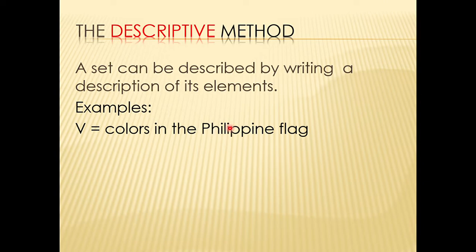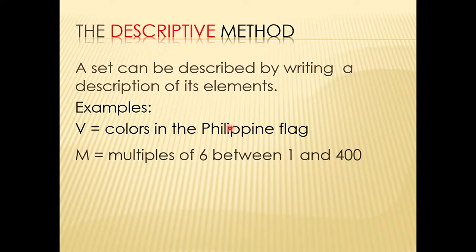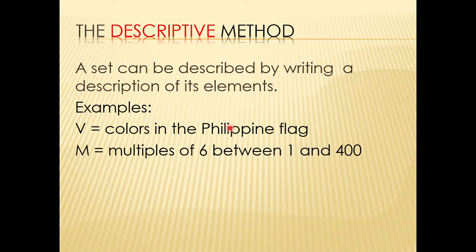Those colors are blue, red, white, and yellow. Another example is set M, which is equal to the multiples of 6 between 1 and 400. We have several elements, but they should be the multiples of 6 between 1 and 400 — that is how we describe our set.